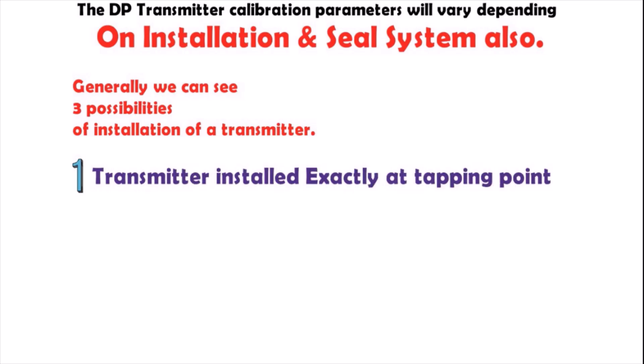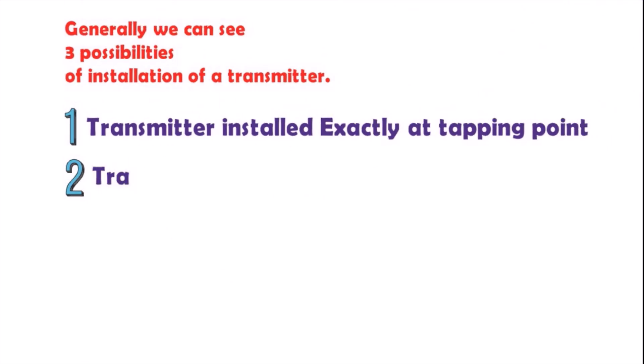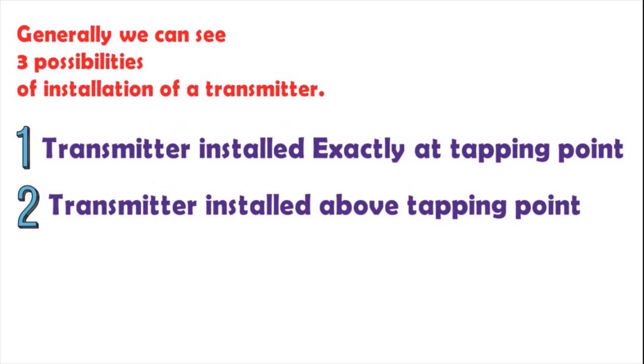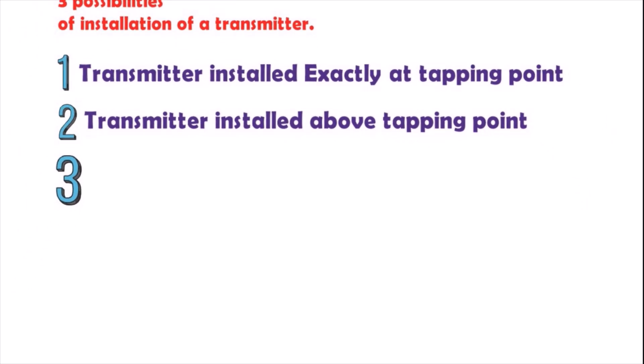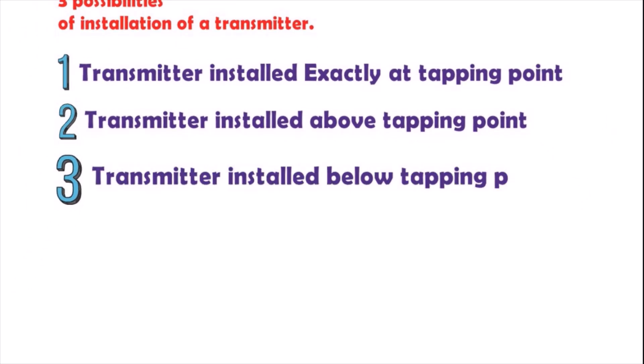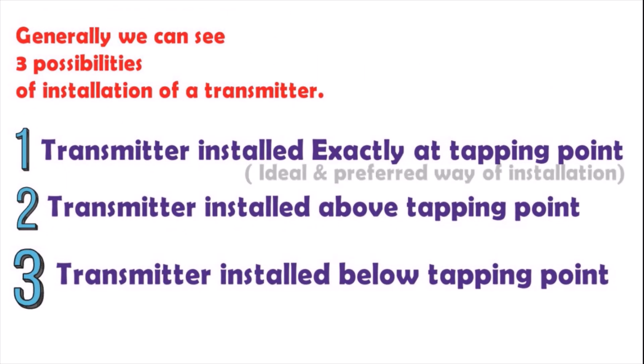installed exactly at tapping point. The second case: the transmitter installed above tapping points. And the third case: transmitter installed below the tapping points. These are the three ways of installation.